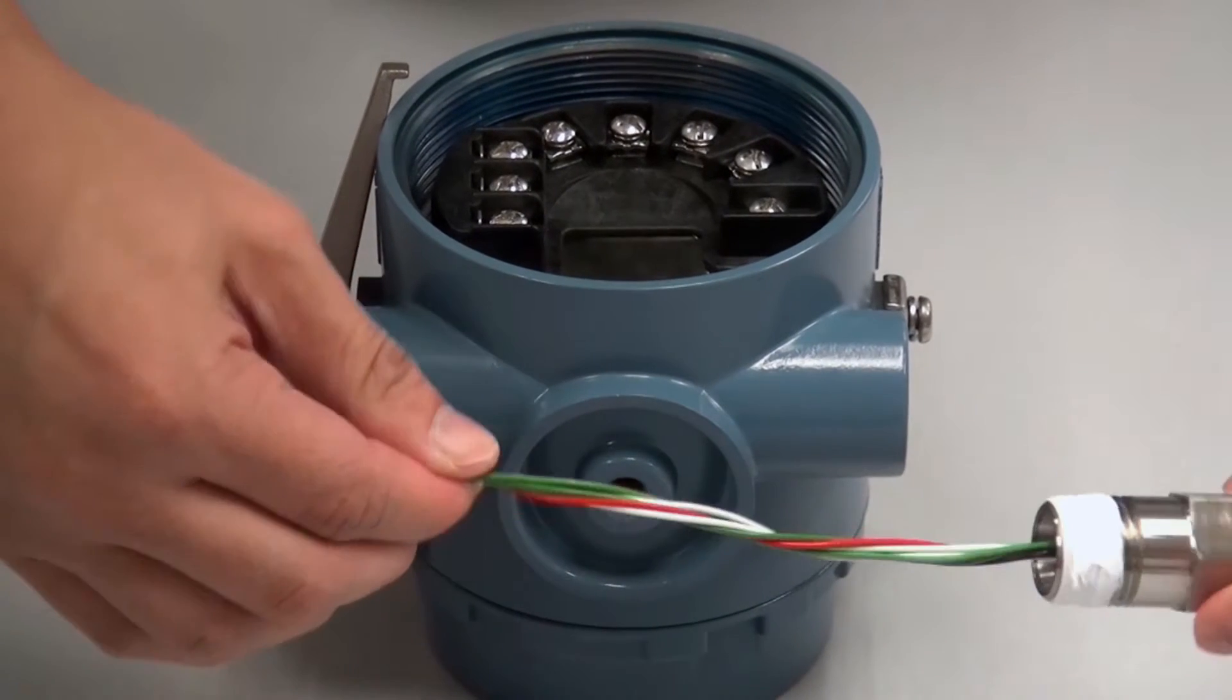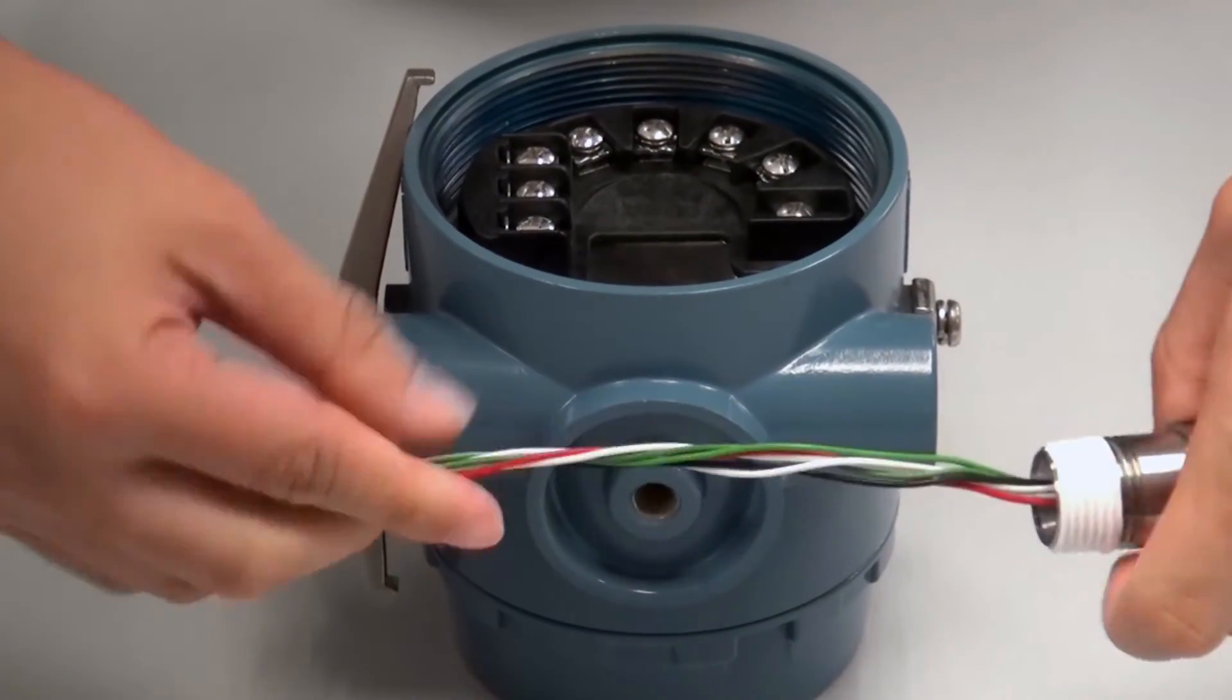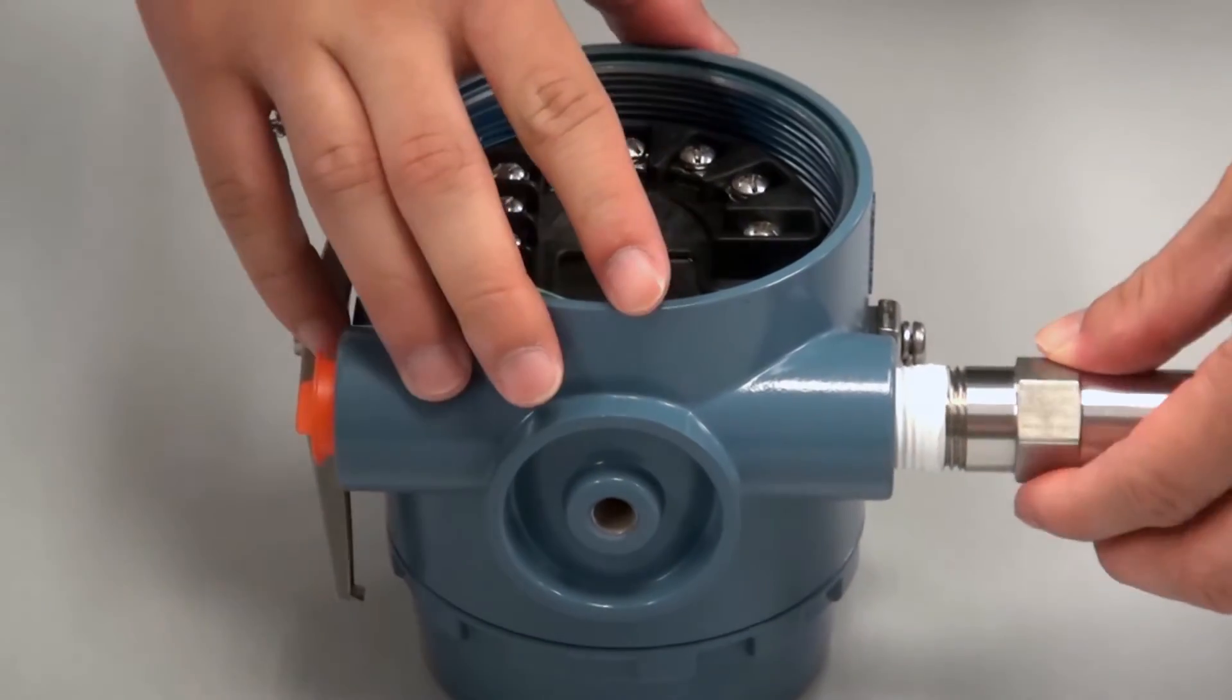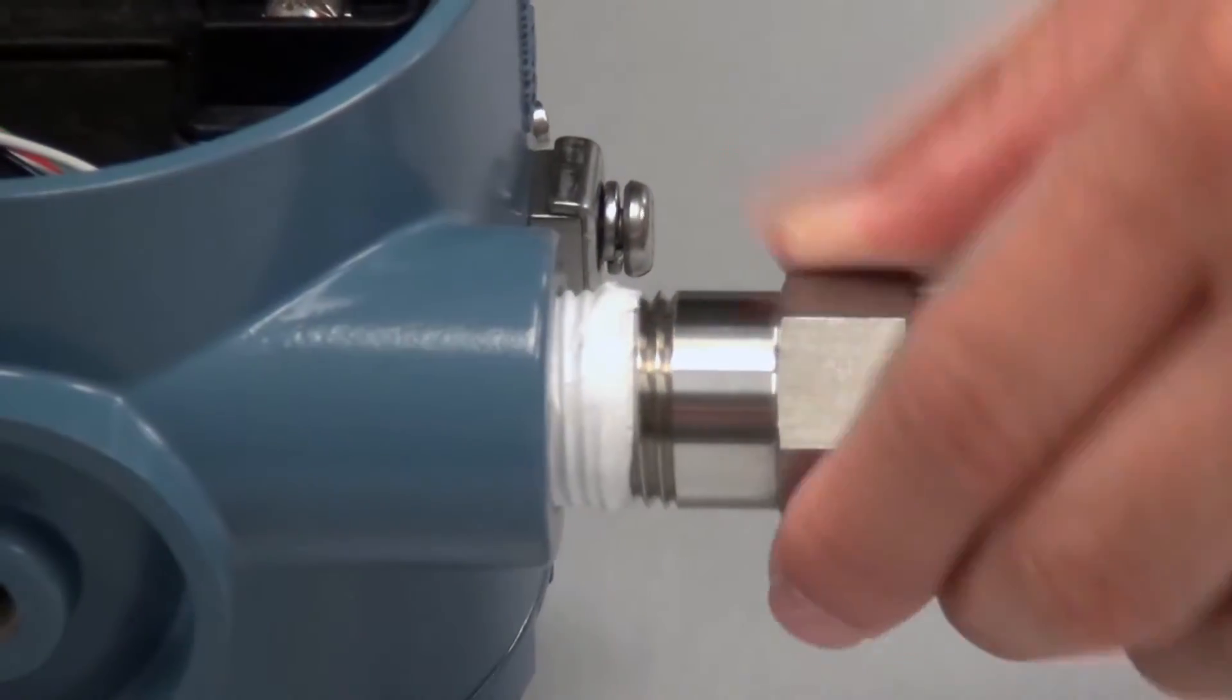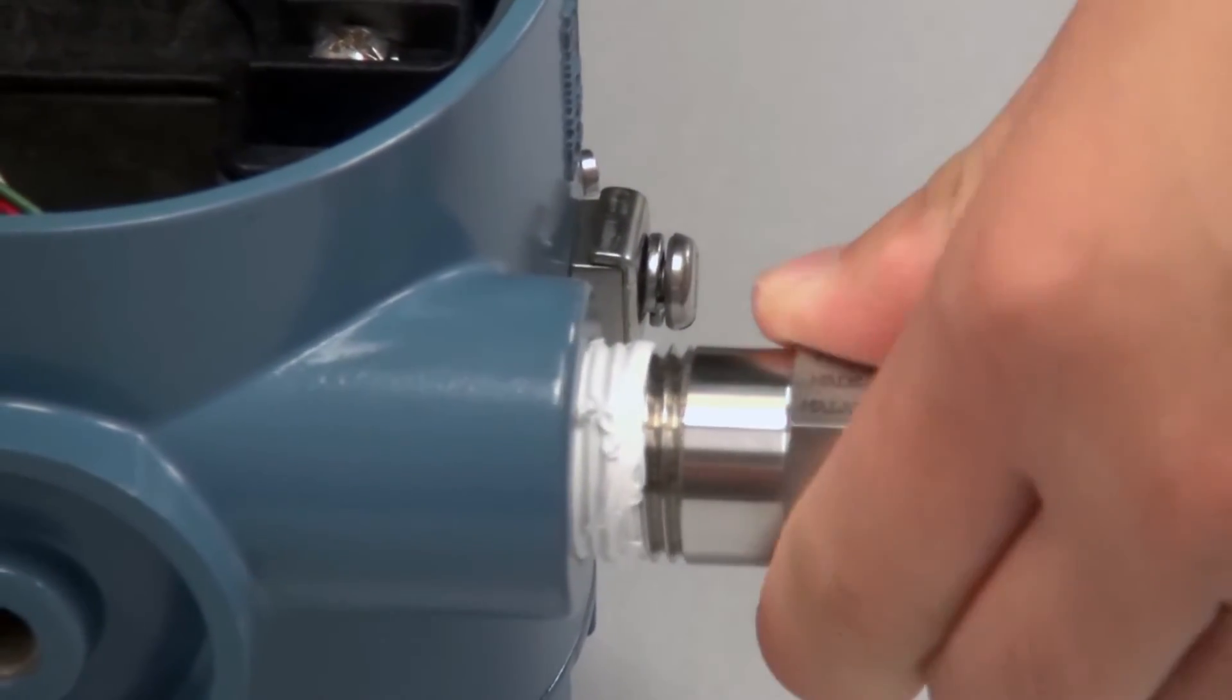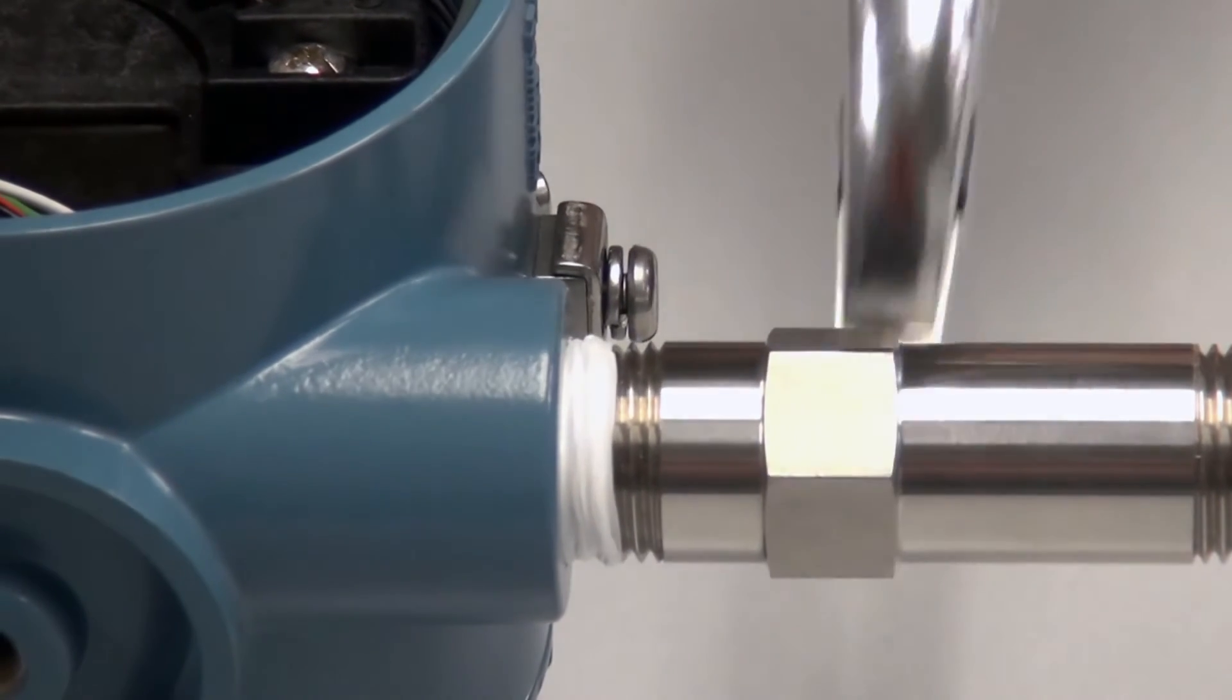To begin, twist the wires on the sensor together to form a single wire braid. Then slide the wires through any conduit opening of the transmitter and screw in the sensor by hand until snug. Applying sealant to the sensor threads beforehand is a recommended practice. Use a wrench to tighten the sensor to local standards.